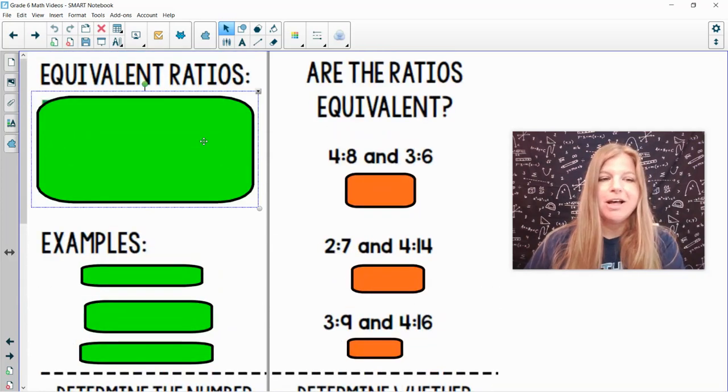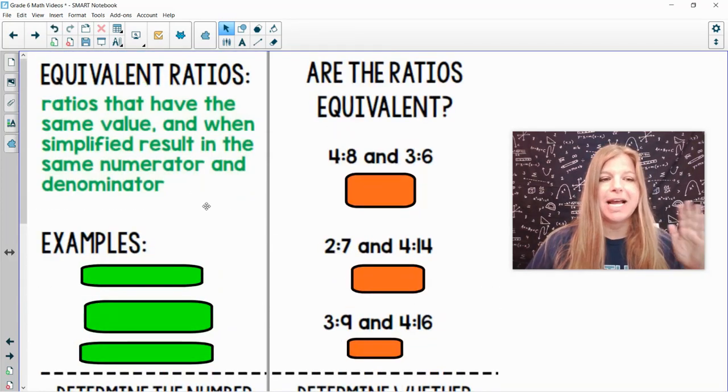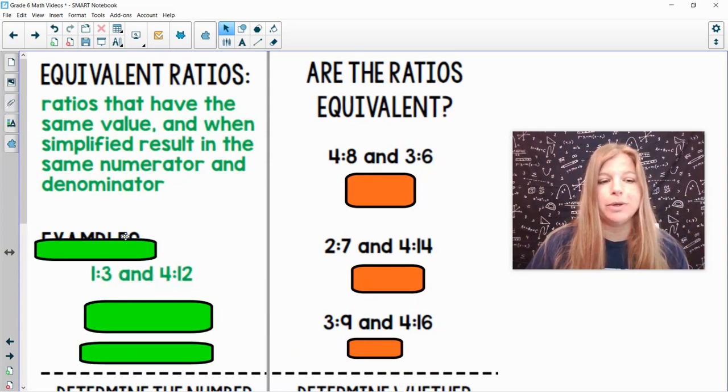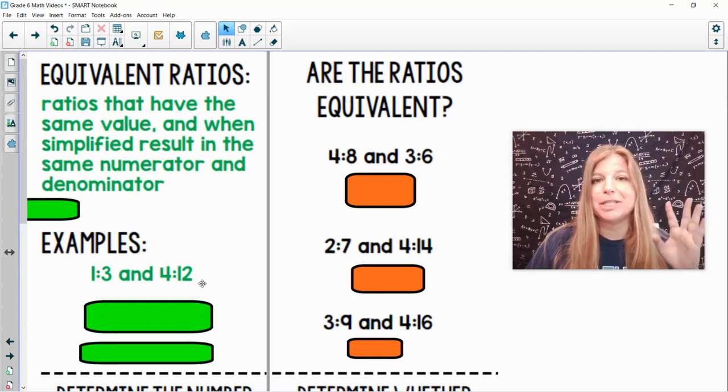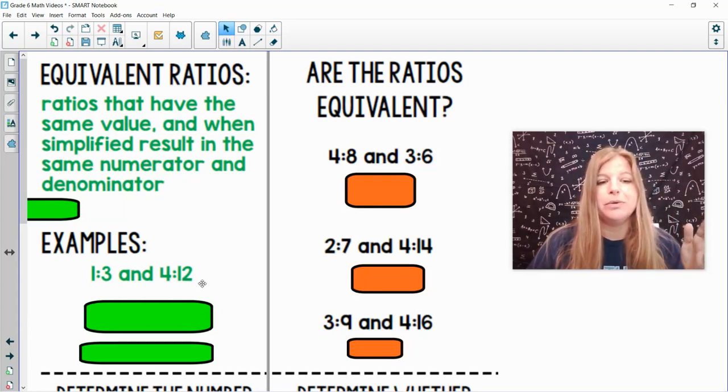Ready? So first of all, equivalent ratios are ratios that have the same value and when simplified result in the same numerator and denominator. For example, 1 to 3 and 4 to 12. Remember ratios can be written with the colon, the word to, or in fraction form.